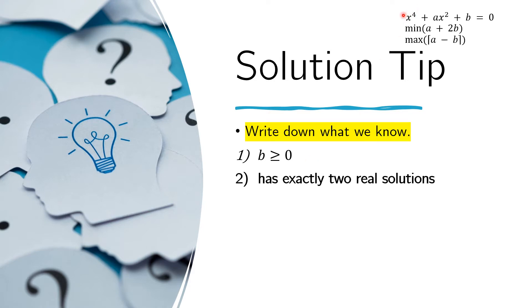We also know that this equation has exactly two real solutions. This means the equation has exactly two solutions and that both of them are real. Normally for a degree-four equation, we would have four roots. But in this case, the problem states that there are exactly two solutions, meaning some of them repeat — at least one has a multiplicity greater than one.